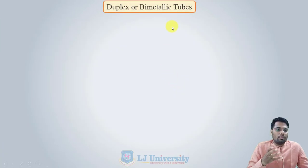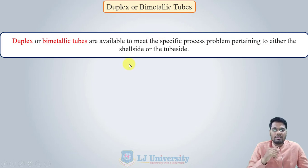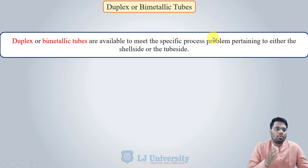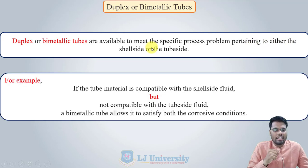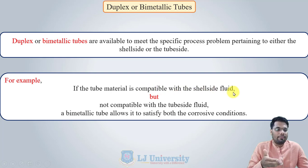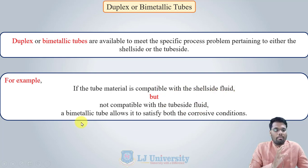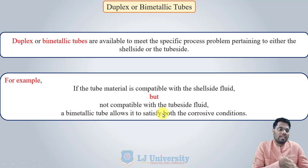Duplex or bimetallic tubes are available to meet specific process problems pertaining to either the shell side or the tube side. For example, if the tube material is compatible with the shell side fluid but not compatible with the tube side fluid, a bimetallic tube allows it to satisfy both corrosive conditions simultaneously.